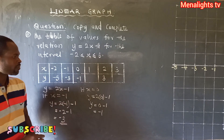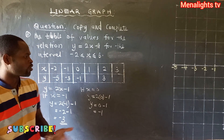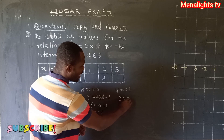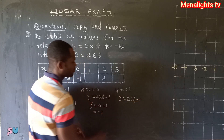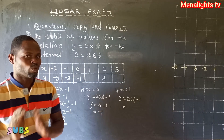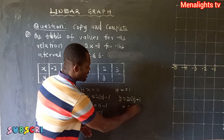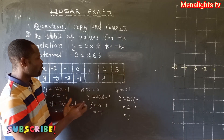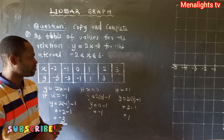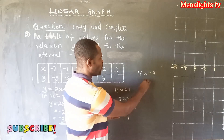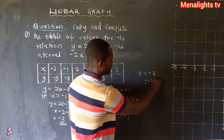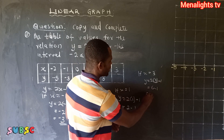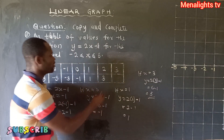If x = 1, then y = 2(1) - 1. 2 × 1 = 2, and 2 - 1 = 1, so under x = 1 the value of y is 1. If x = 3, then y = 2(3) - 1 = 6 - 1 = 5, so under x = 3 the value of y is 5.